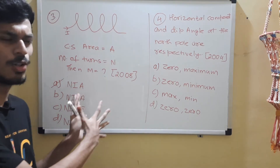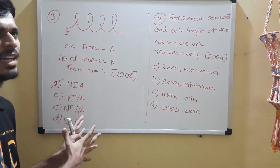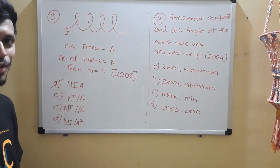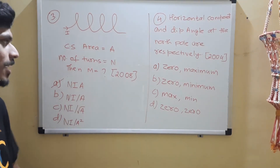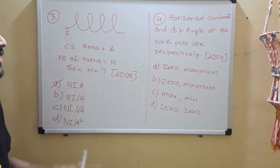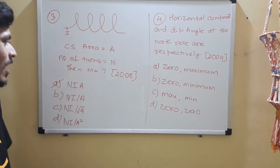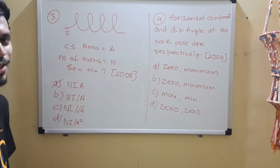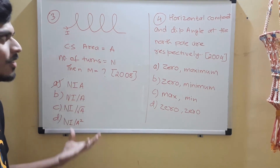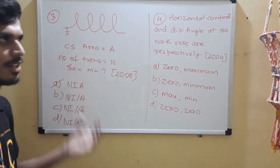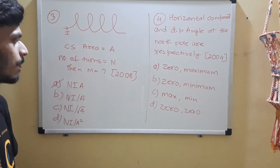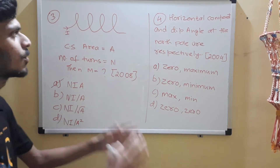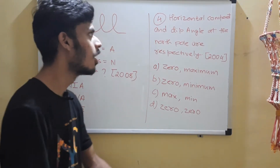You can also verify by dimensional analysis if you want, but NIA — option A — is the correct choice. Let's come to question 4 now: the horizontal component and the dip angle at the north pole are respectively?